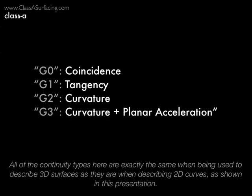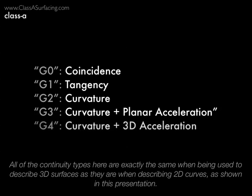In this presentation, I've been using 2D curves to demonstrate different types of continuity, for the most part, except for G4. But you'll be able to use the exact same principles and terminology when working with continuity between surfaces. But really, who cares? I mean, that's the question that everybody always wonders — why the heck does it matter what kind of continuity there is between two curves or two surfaces, as long as it looks good, right?